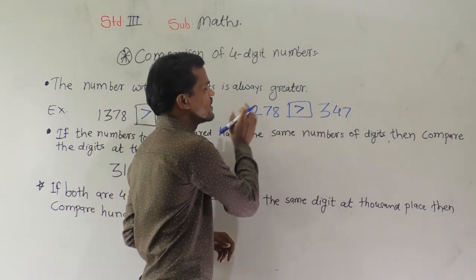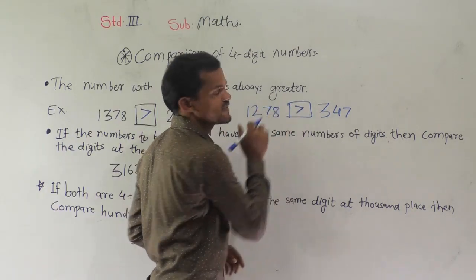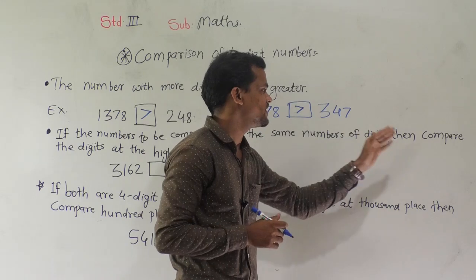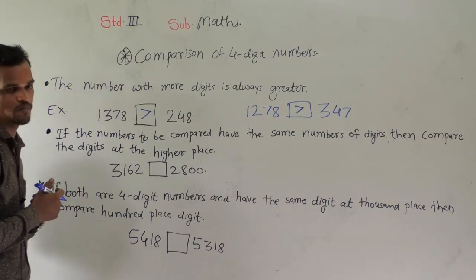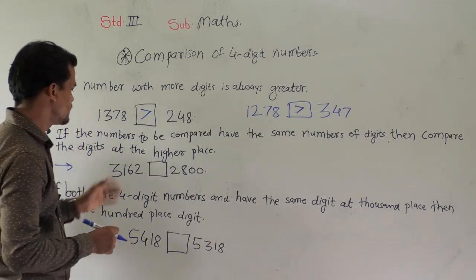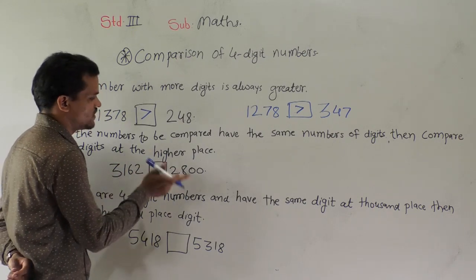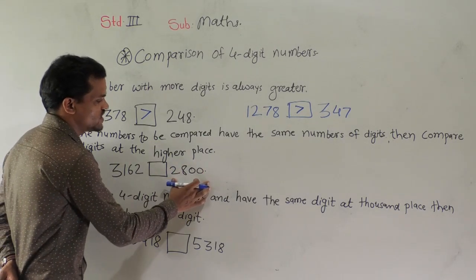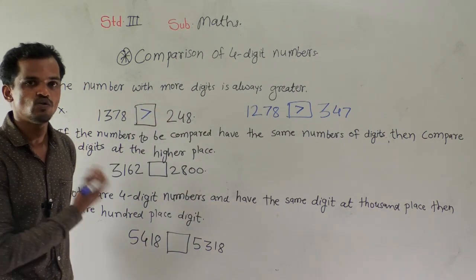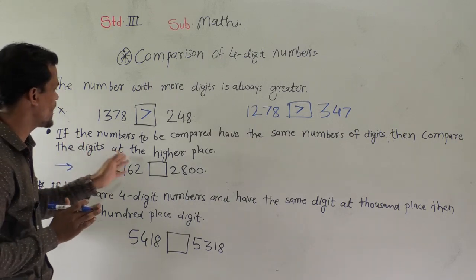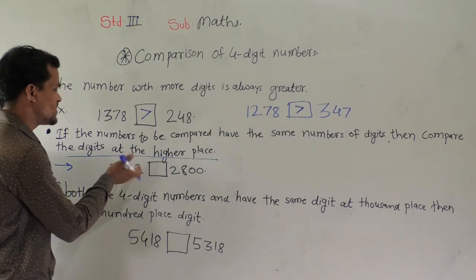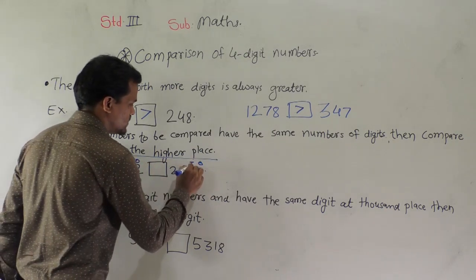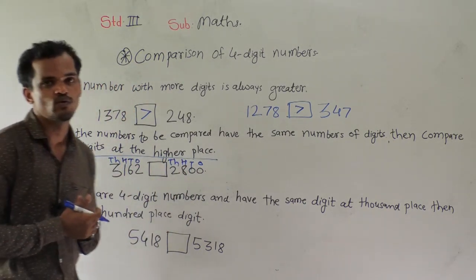The open side of this symbol should be at the greater number. The next case: if the numbers to be compared have the same number of digits, then compare the digits at the higher place. In the second case, we can observe there are two numbers: 3162 and another number is 2800. This number is a 4-digit number and this number is also a 4-digit number, so you have to compare the digits at the higher place — which is the thousands place.